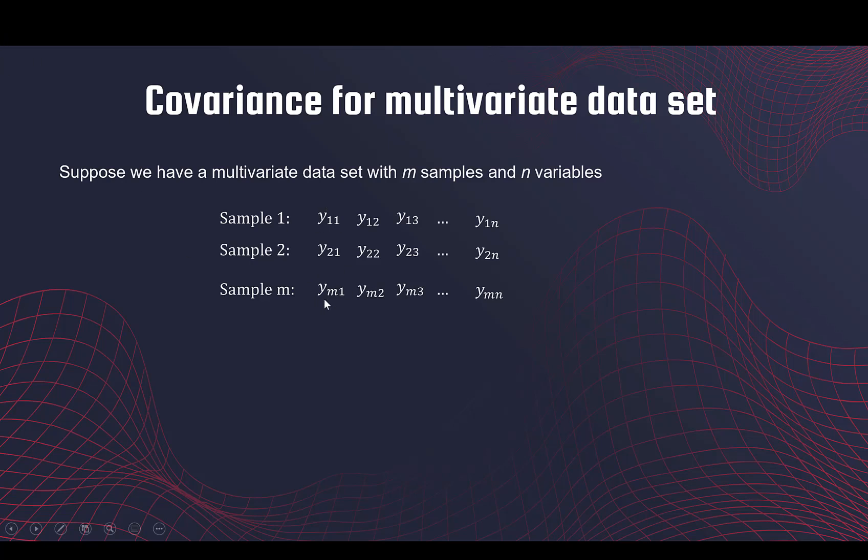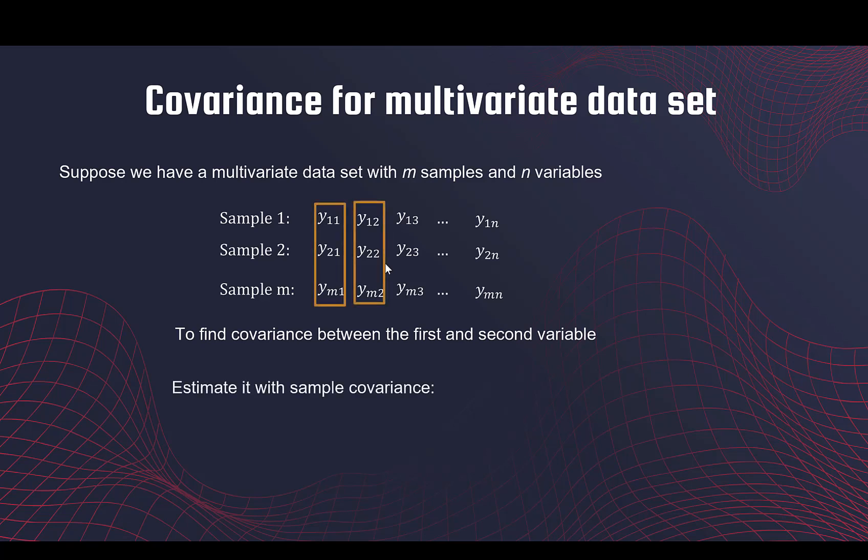The first and second columns have the data on the first two variables. So what do we do? We look at the sample covariance. Sample covariance is given by this formula.